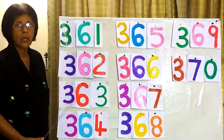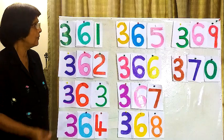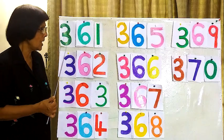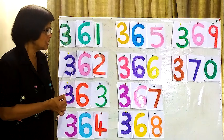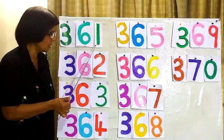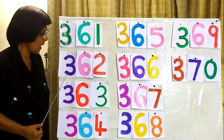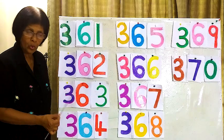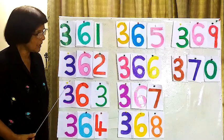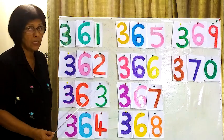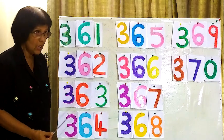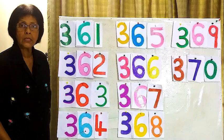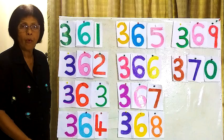Right? Now we will read from the beginning: 361, 362, 363, 364.